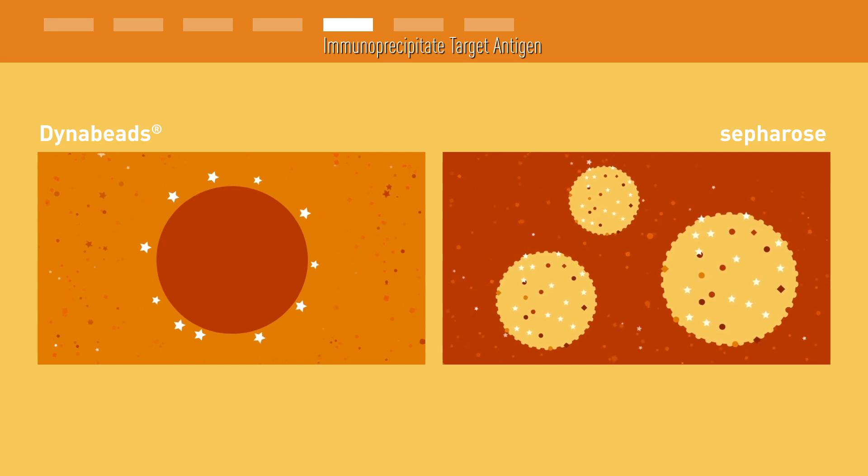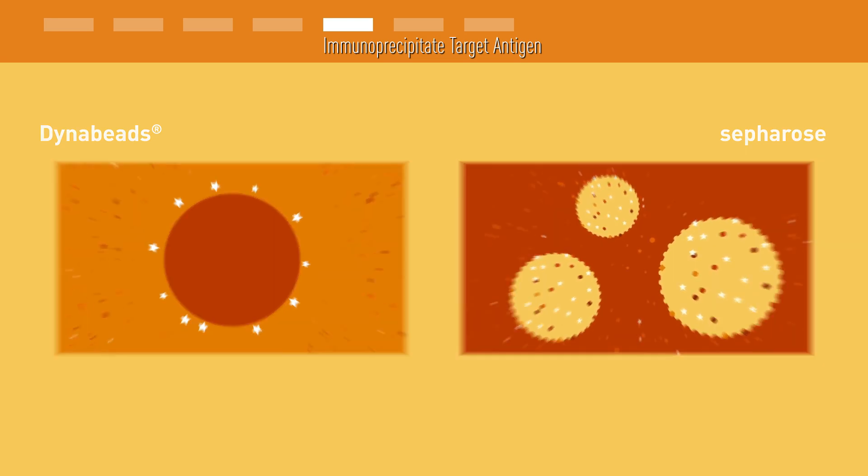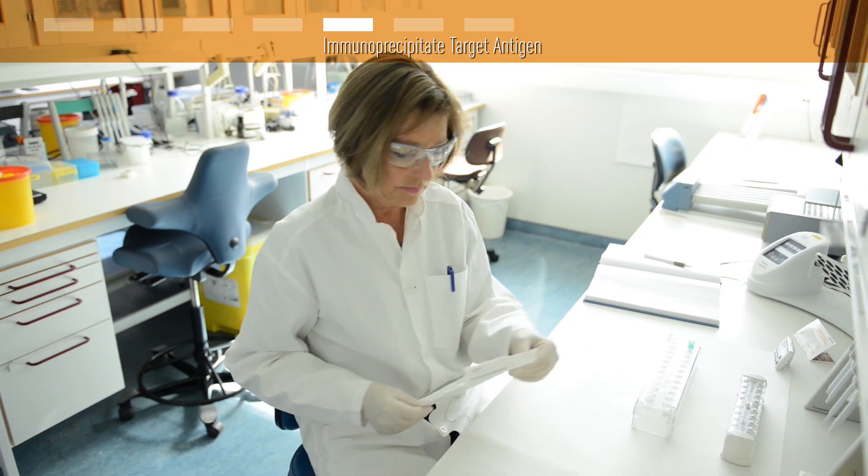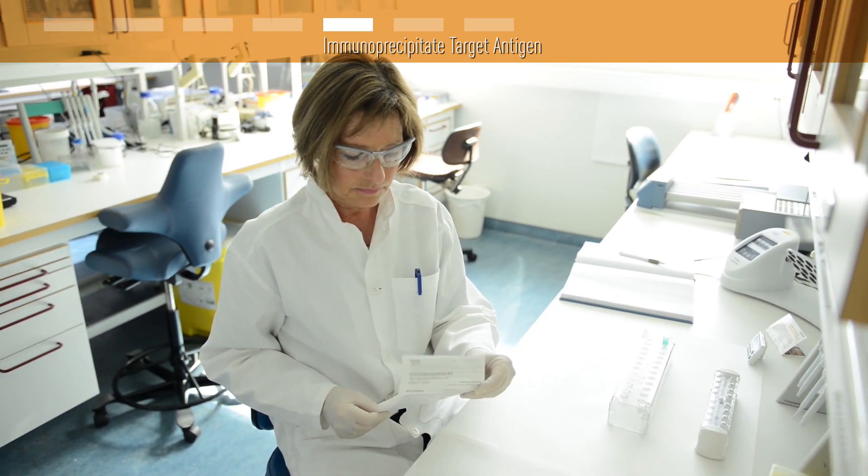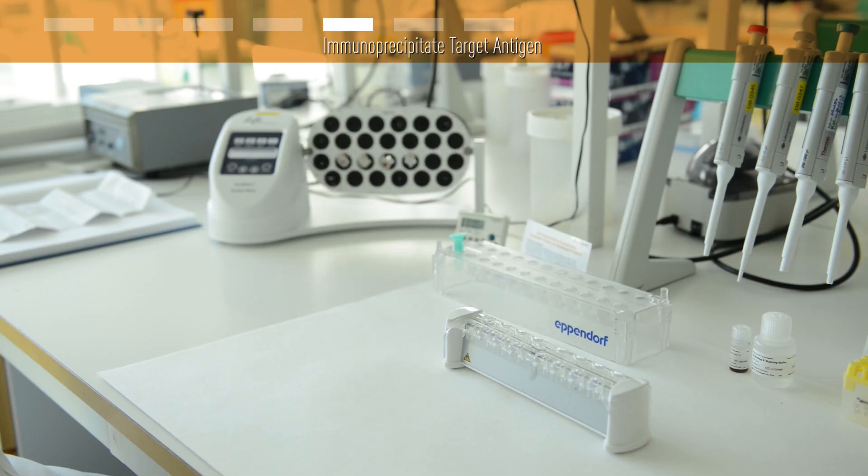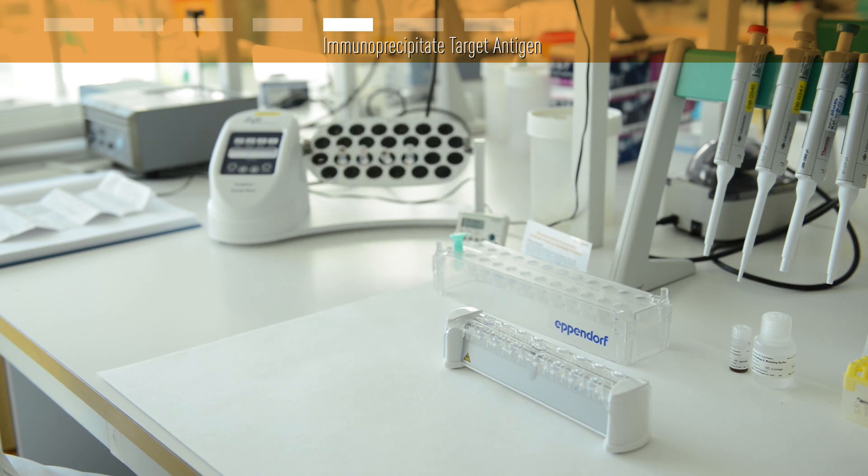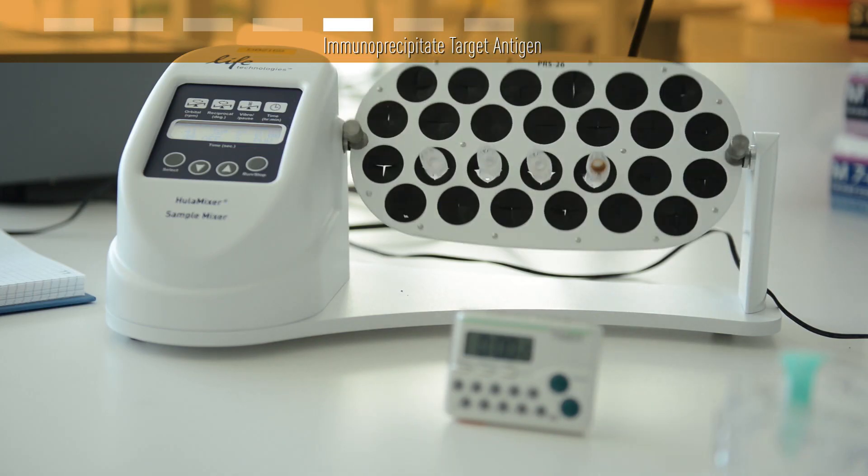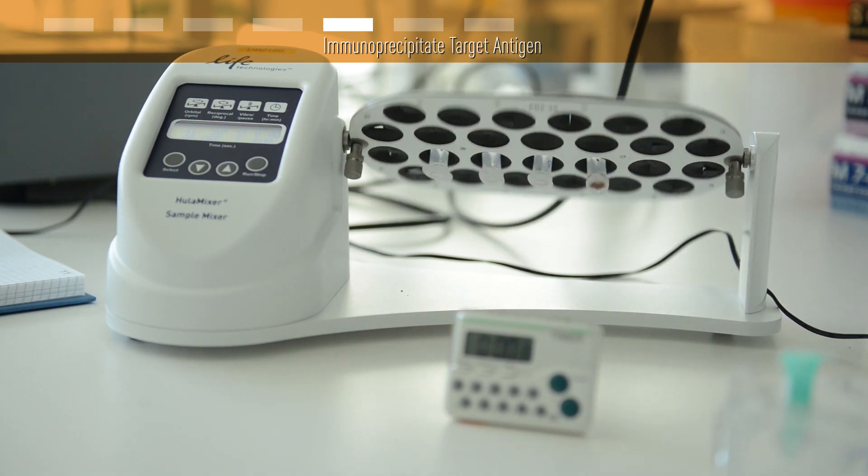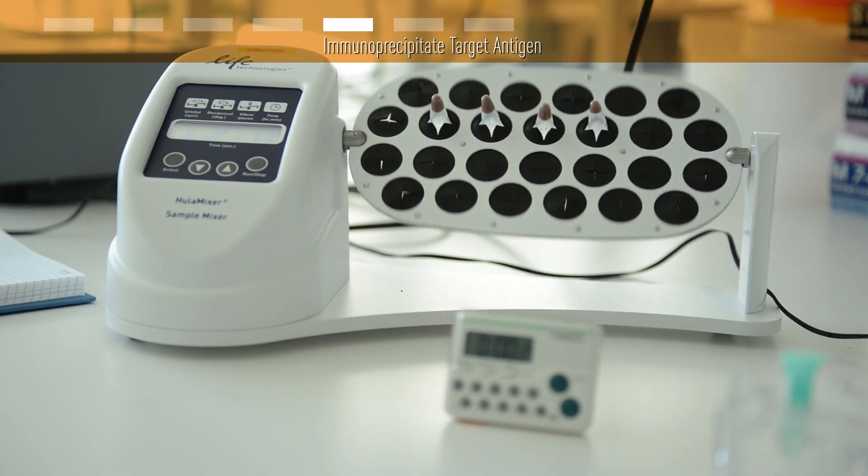In most cases, you won't even need to pre-clear your sample. The functionality of your antibody is critical for a successful result. If you know that your antibody has a low affinity, you might want to incubate for 20 minutes, or even up to 2 hours, as this can help increase the yield. Keep in mind that this might also lead to higher background binding.